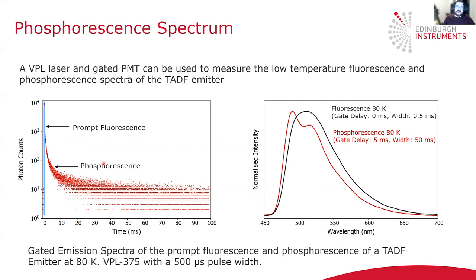To measure the spectrum of these two components, we use detector gating. If we set the gate delay to zero milliseconds with a width of 0.5 ms, we're measuring predominantly the prompt fluorescence, which gives the fluorescence spectrum of the sample shown in black. If we then change the gate delay to 5 milliseconds with a width of 50 ms, we'll be measuring within the phosphorescence timescale and can measure the phosphorescence spectrum. This allows you to fully characterize the emitter.